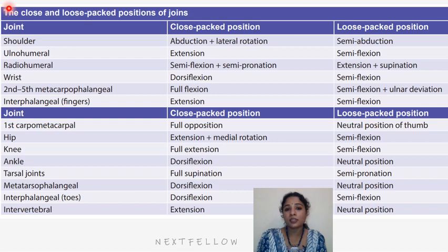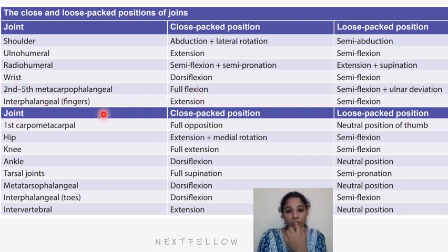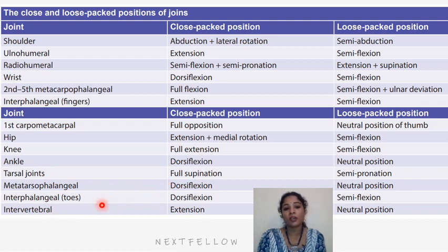Understanding open and closed packed positions is essential when performing manipulations. For example: shoulder — abduction and lateral rotation; elbow (ulno-humeral) — extension; radio-humeral — semi-flexion; wrist — dorsiflexion; interphalangeal joints — extension; first carpometacarpal — full opposition; hip — extension and medial rotation; knee — full extension; ankle — full dorsiflexion; tarsal joints — full supination; metatarsal and interphalangeal joints — dorsiflexion; intervertebral joints — extension. These are the closed packed positions where the joint is highly stable.